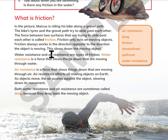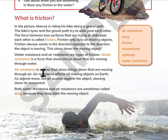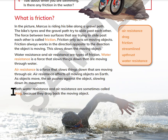Water resistance and air resistance are types of friction. Water resistance is a force that slows things down that are moving through water. Air resistance is a force that slows things down that are moving through air. Air resistance affects all moving objects on Earth. As objects move, the air pushes against them, slowing down their movement. Both water resistance and air resistance are sometimes called drag because they drag back the moving objects.